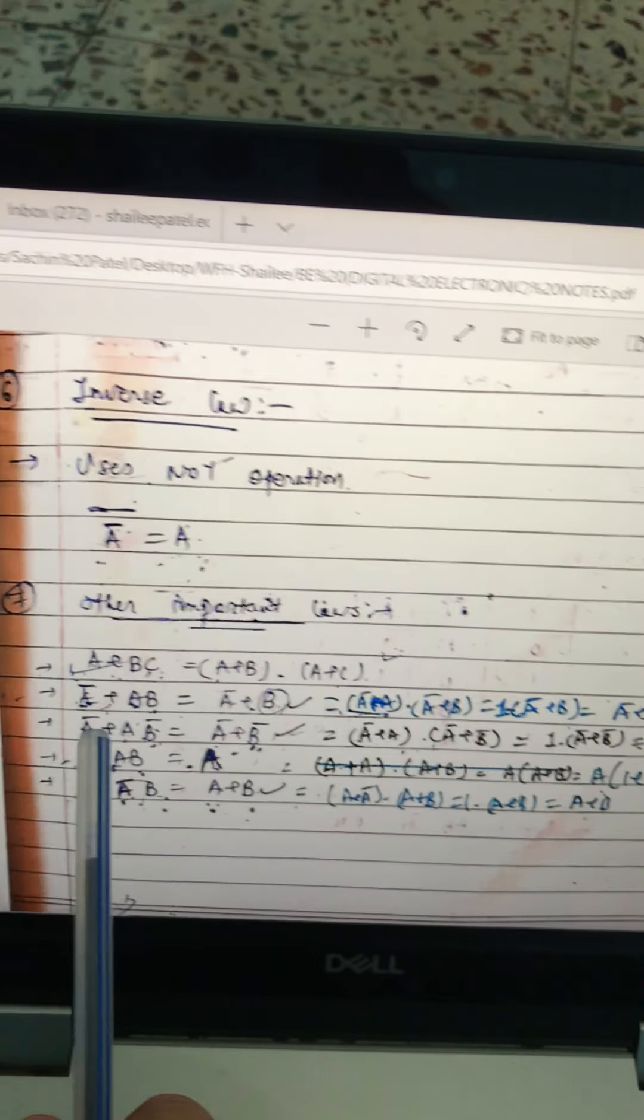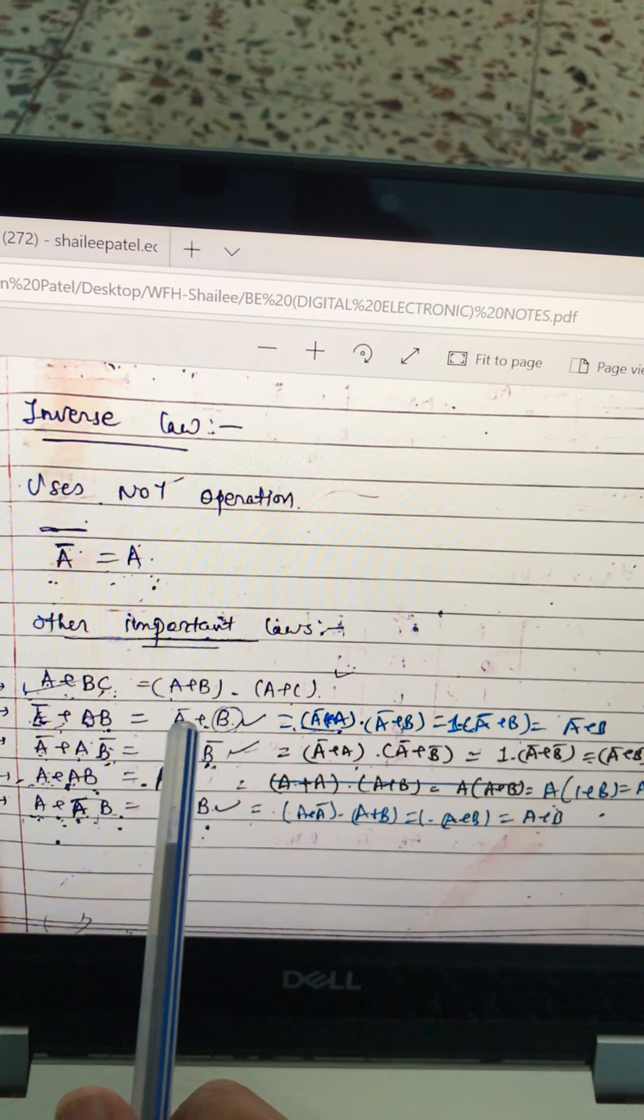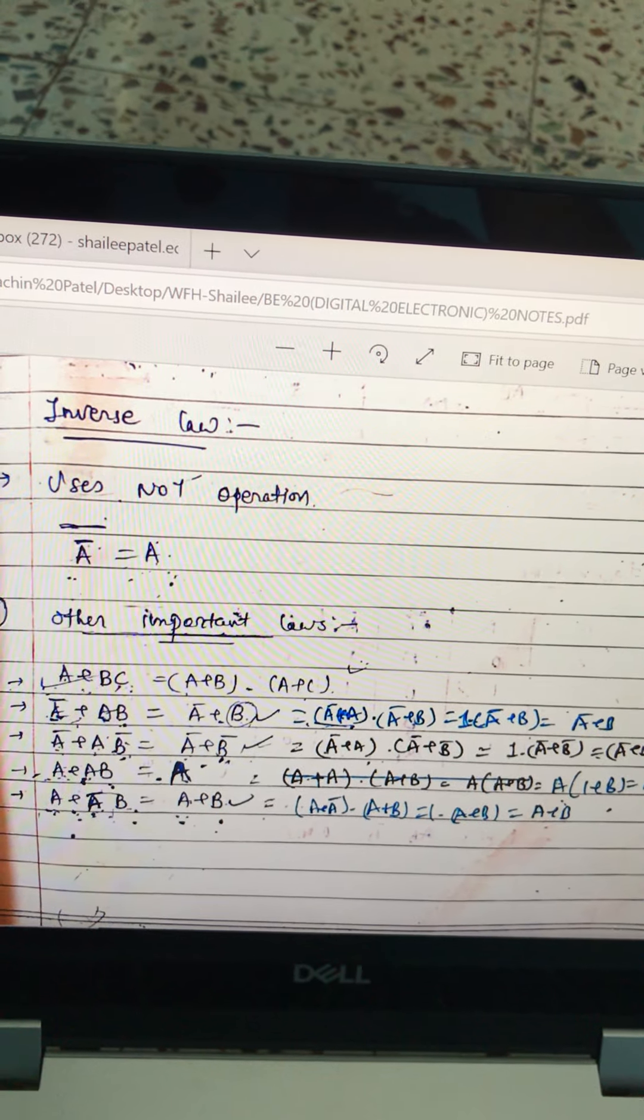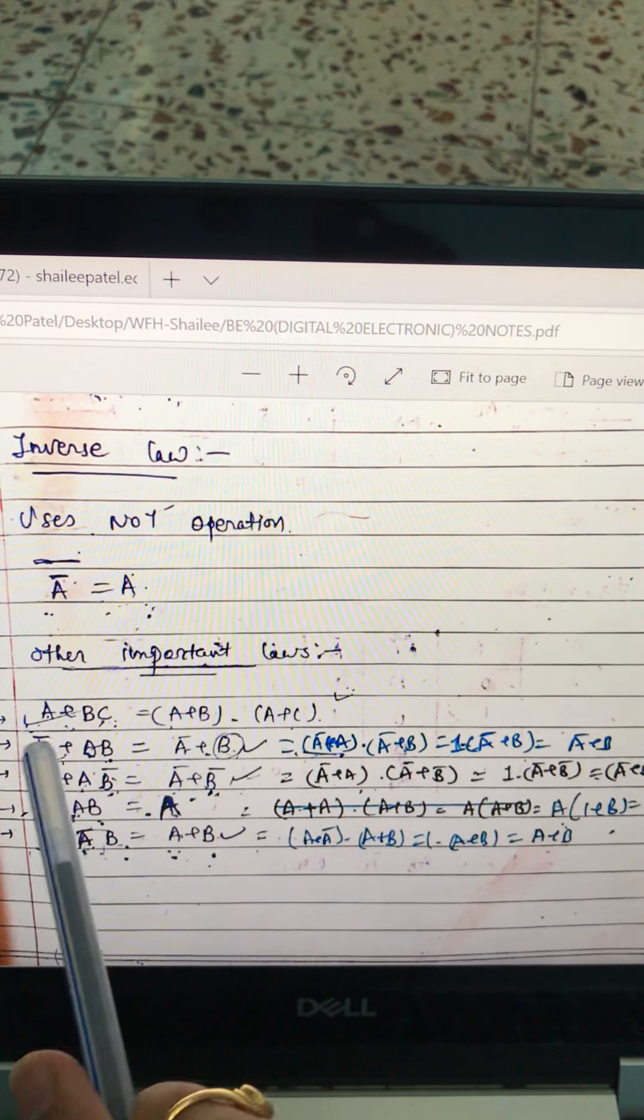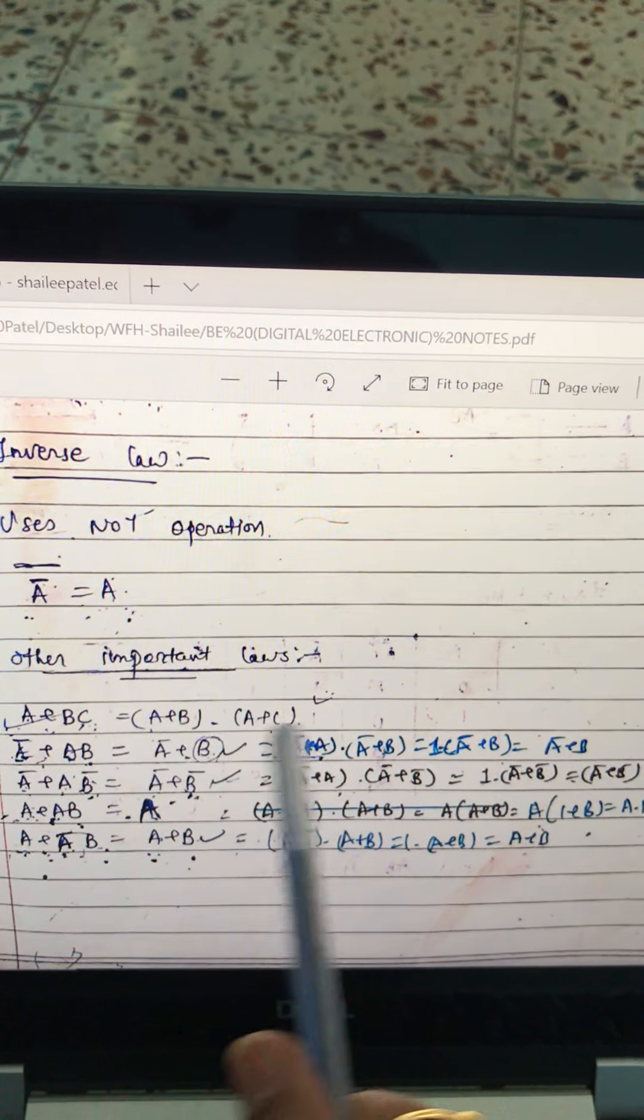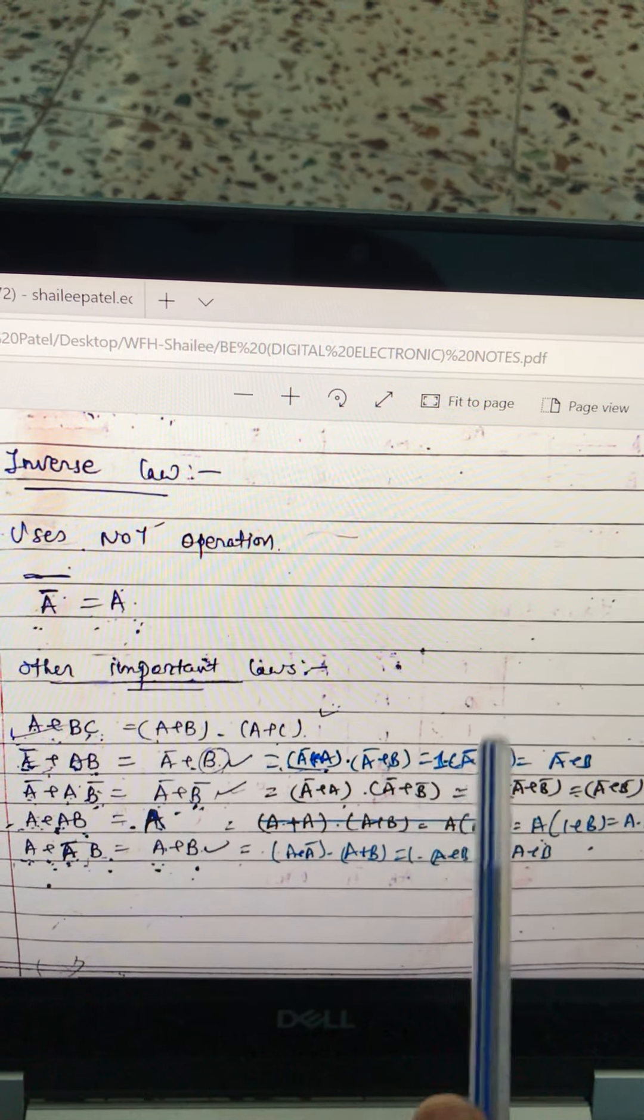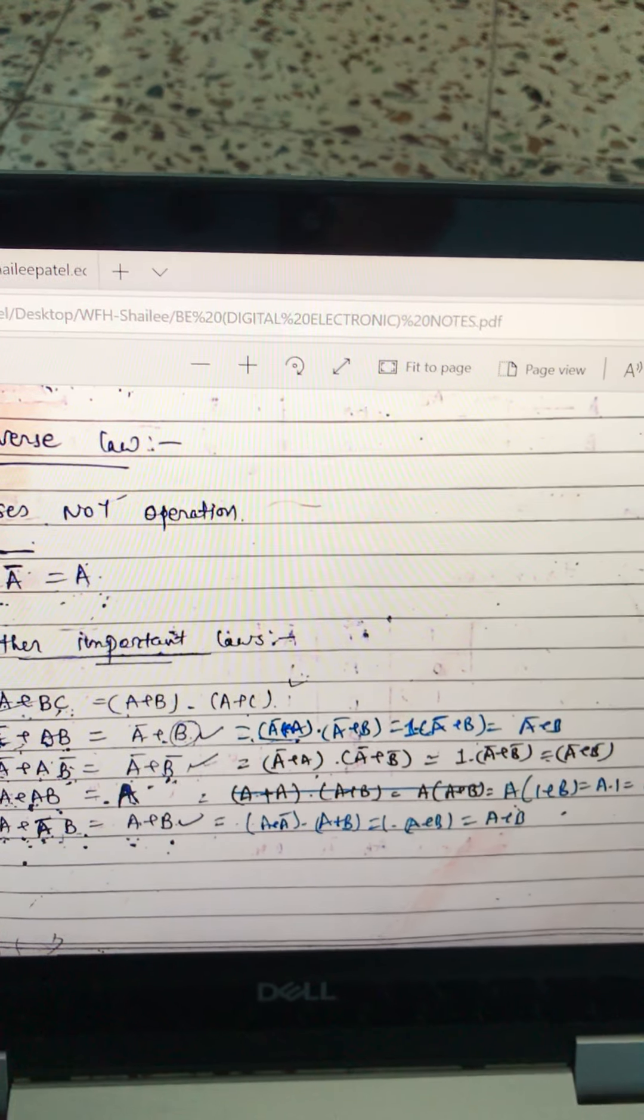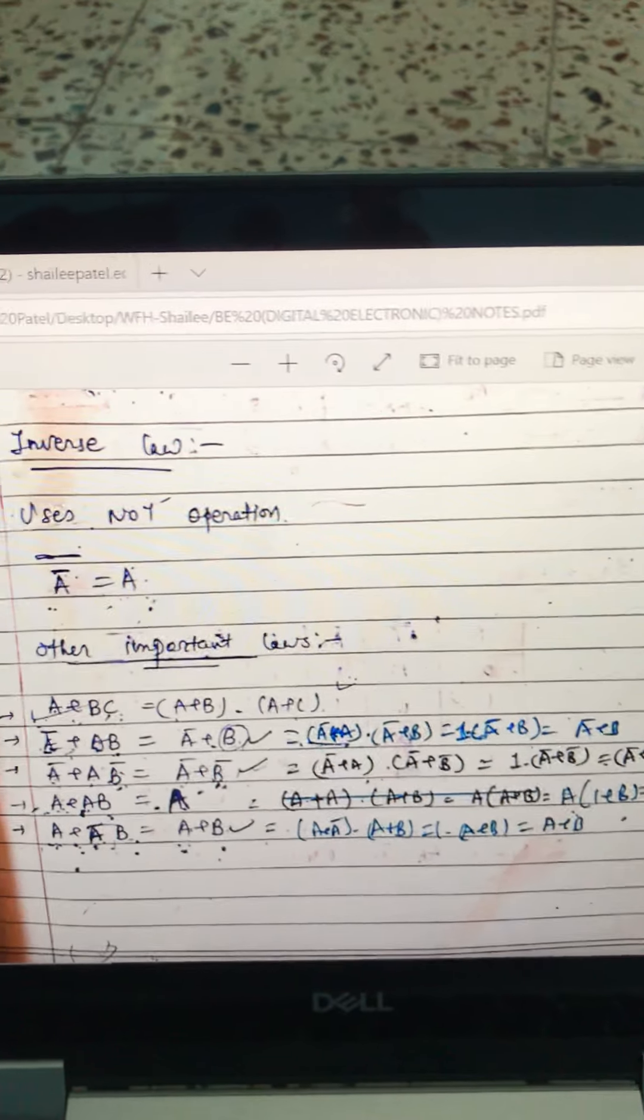Second one is A bar plus AB. You get the answer A bar plus B. Sometimes it is asked to prove this. Let's open the bracket. So A bar plus A will be there and A bar plus B will be there. But A bar plus A will be one according to our OR law. So you will get multiplication with this. One in multiplication with any number, you will get A bar plus B.